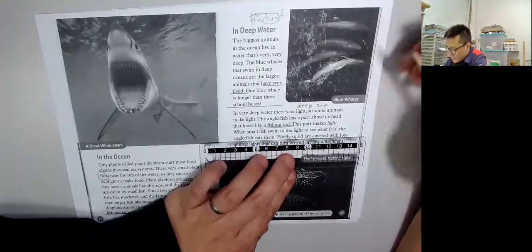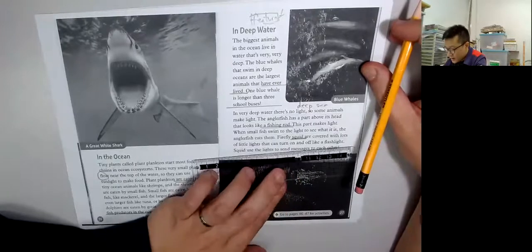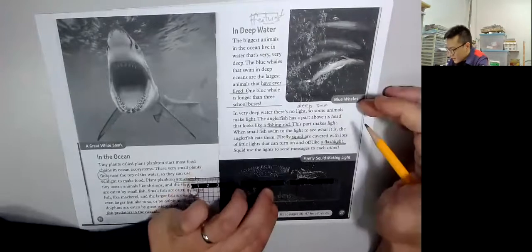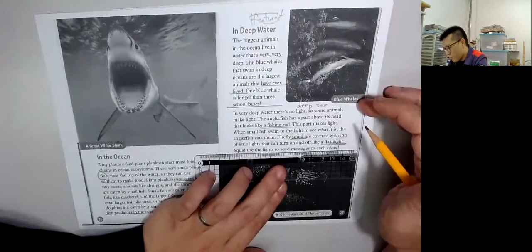Firefly squid, 墨魚, are covered with lots of little lights that can turn on and off like a flashlight. The squid use the lights to send messages to each other.